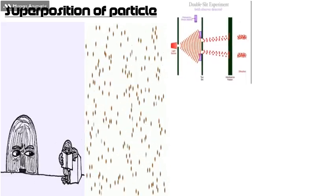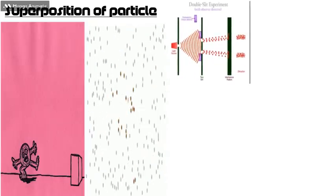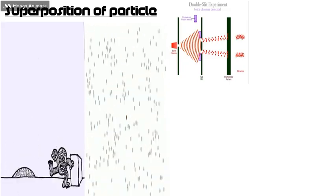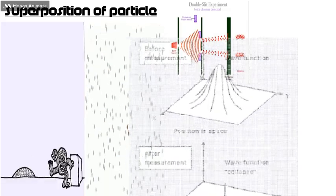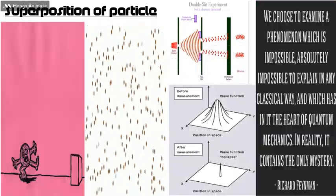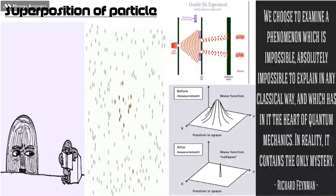The double-slit experiment gets weirder when scientists placed a detector to track the trajectory of the particle, and suddenly the interference pattern disappears. This means the very act of observation collapses all the possibilities into one reality. The act of observation disturbs the quantum state, so it is impossible to examine the phenomena.